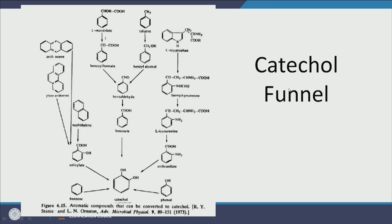Let us look at the catechol funnel. Different aromatic compounds — anthracene, tryptophan, toluene, naphthalene, benzaldehyde, phenol — all undergo the catechol pathway no matter where they start from. This is where the benzene ring is most vulnerable to cleavage. Microbes prefer to convert any aromatic compound to catechol first because once catechol is reached, it is easy to break. This convergence of multiple substrates toward catechol is called the catechol funnel.